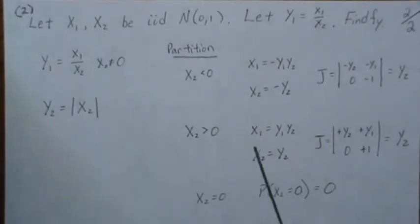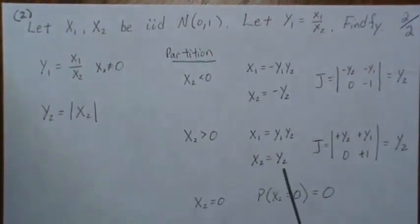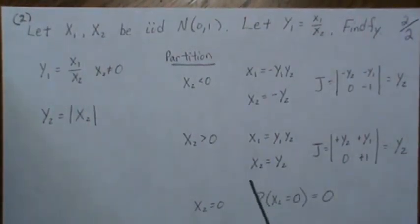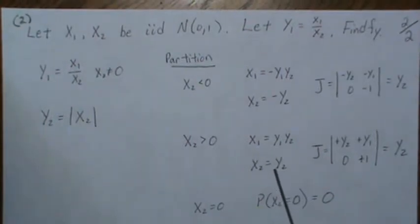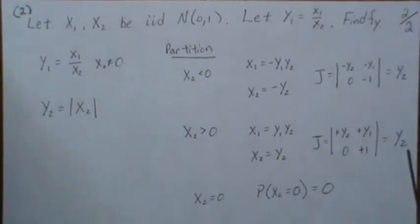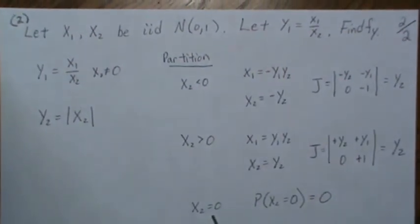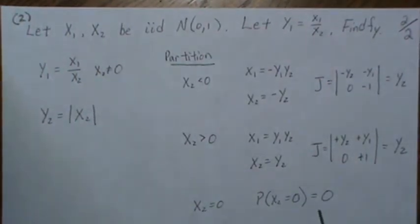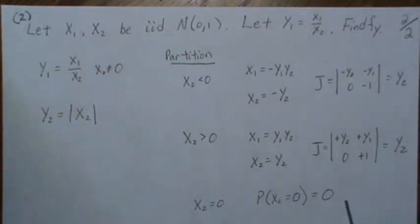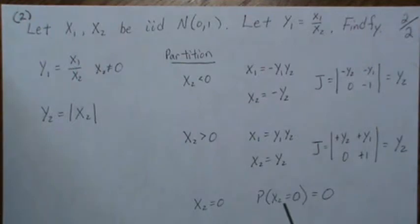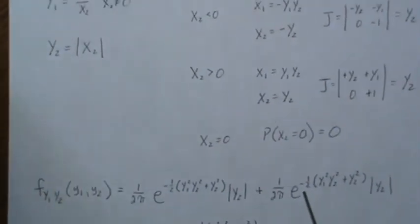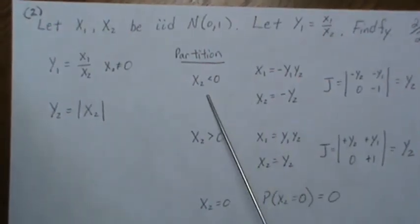When we're greater than 0, the transformation is this—we just use the positive X2—and then back solve when we get this. The Jacobian becomes Y2. When X equals 0, the probability that X equals 0 is 0, so we can ignore it.